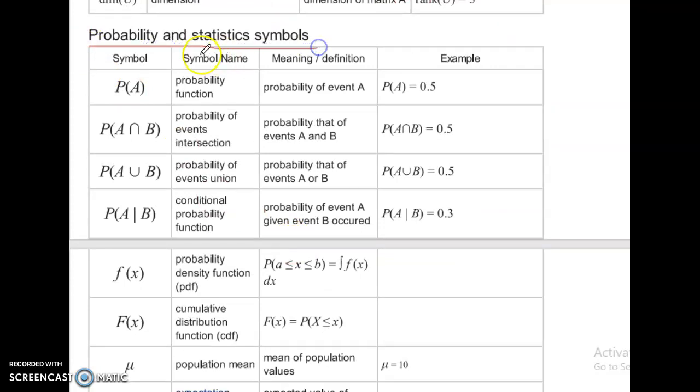Probability and statistics symbols. We have a probability function. Probability of event A. P of A equal to 0.5.